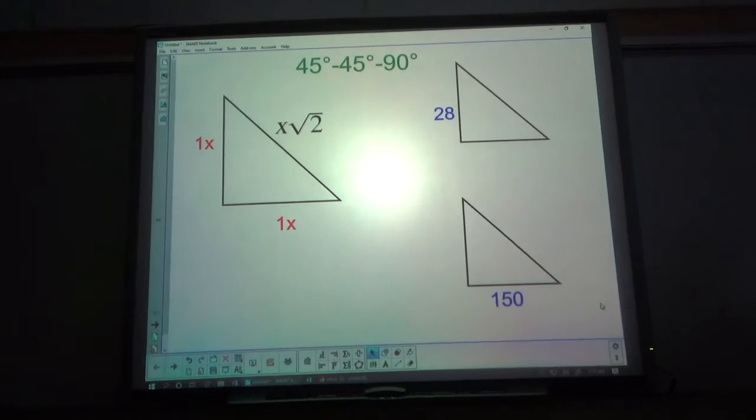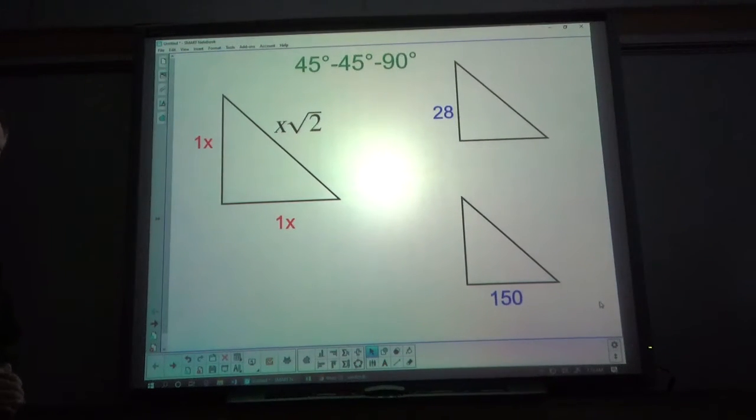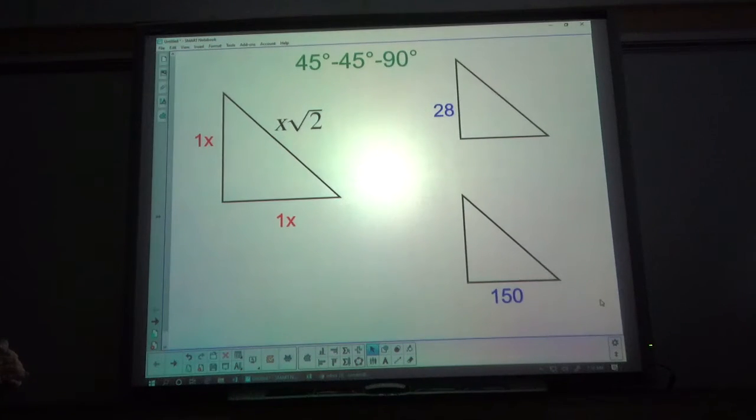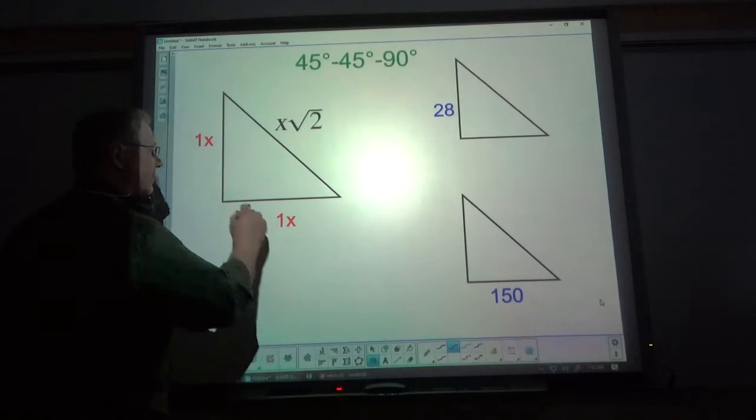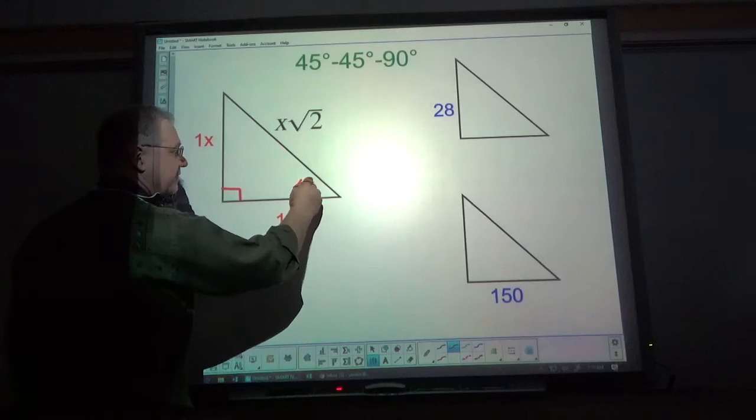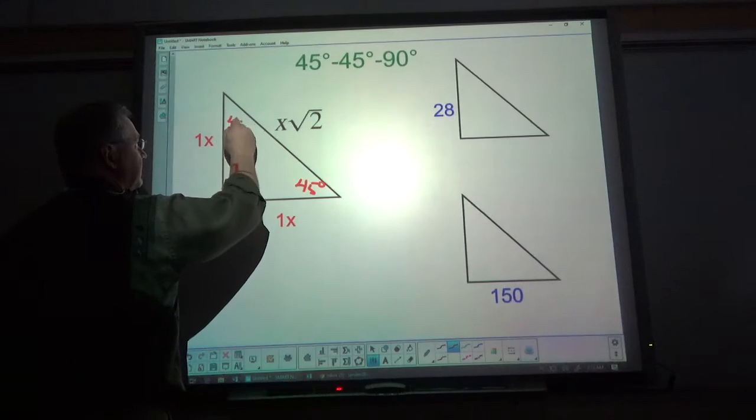All right, today we're going to talk about a group of special right triangles called 45-45-90 degree triangles. Now they all have a 90 degree angle and the other two angles are 45 degrees each.